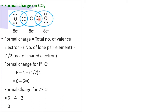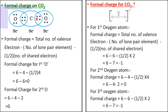Since all atoms show zero formal charge, CO₂ is a neutral molecule. If a molecule gets zero formal charge, it is most stable. The second example is CO₃²⁻, the carbonate ion. This is the Lewis structure for CO₃²⁻. First, we determine how many valence electrons are present, because the Lewis structure and formal charge calculations are based on the number of valence electrons each atom has.